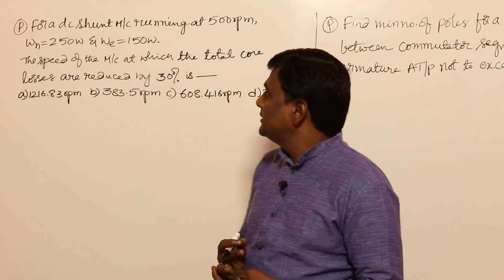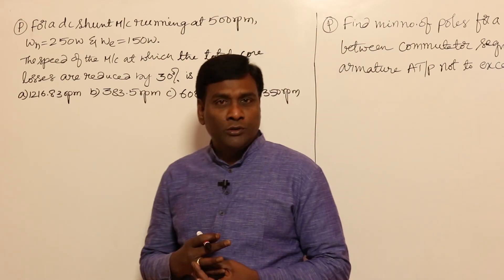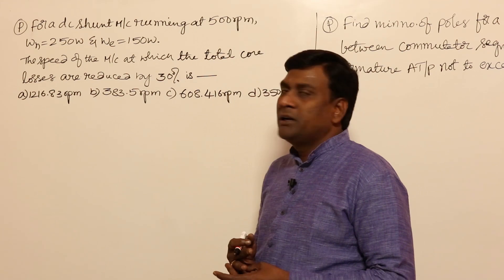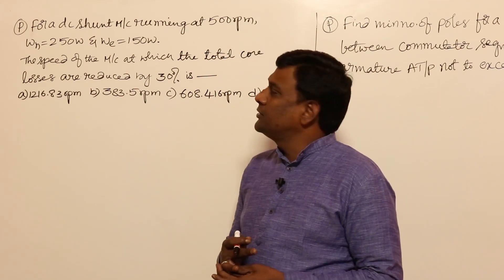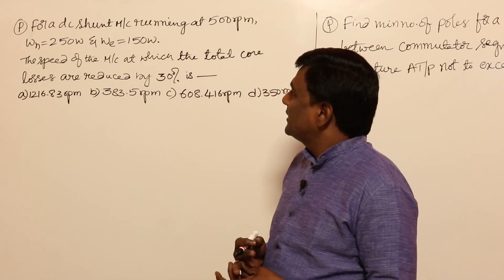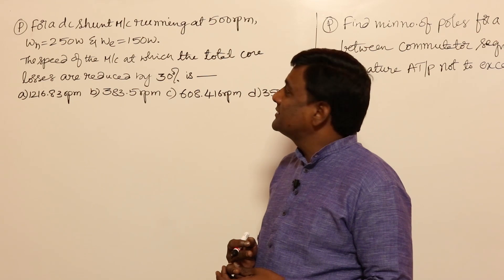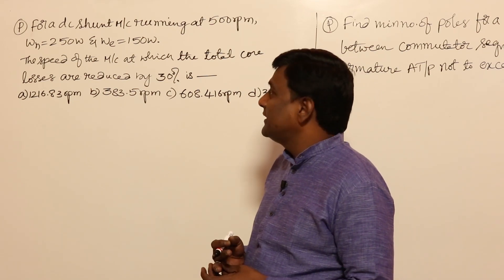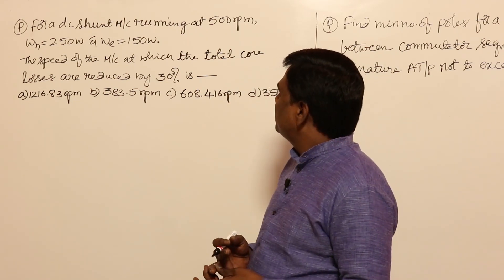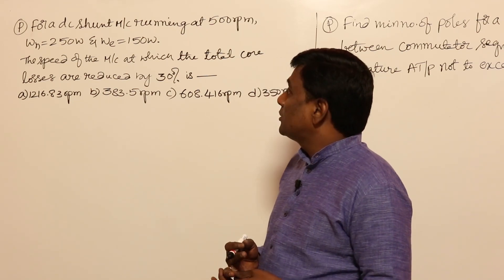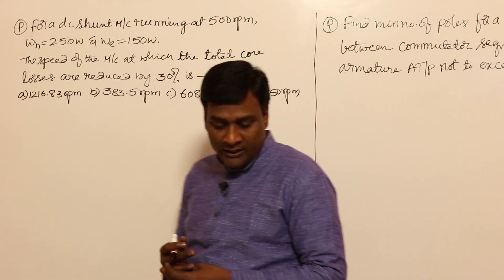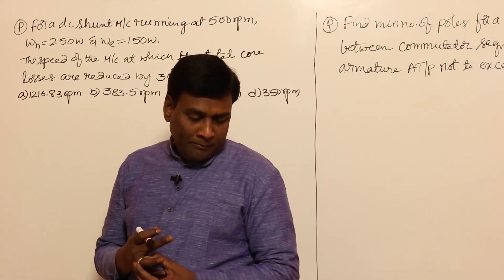In this session, let us see two beautiful questions — the first is sent by Raj. For a DC shunt machine running at 500 rpm, hysteresis losses are given as 80 [watts] and eddy current loss is also given. We need to find the speed of the machine at which the total core loss is reduced by 30 percent.